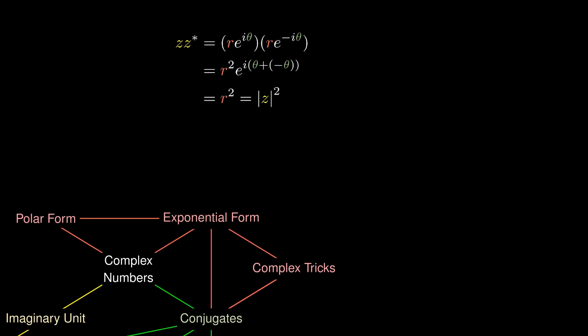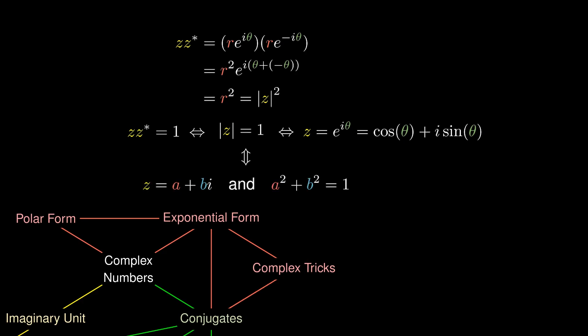The power of this formula arises when the modulus of z equals 1, simplifying z·z* = 1. This holds whether z = e^(iθ) or z = cos(θ) + i·sin(θ). In Cartesian form, the condition becomes a² + b² = 1, inspired by the Pythagorean theorem. The modulus of z equaling 1 plays a crucial role in problem solving.